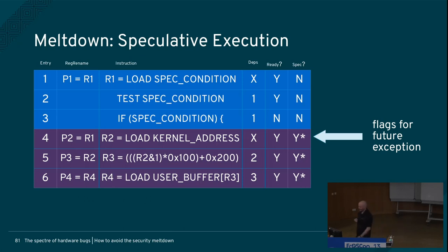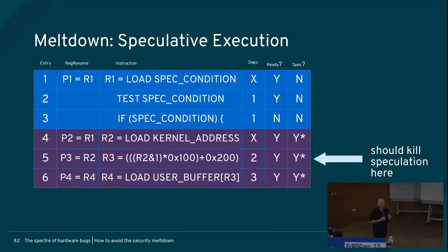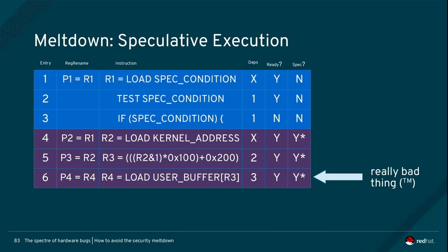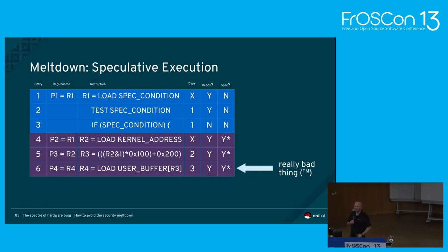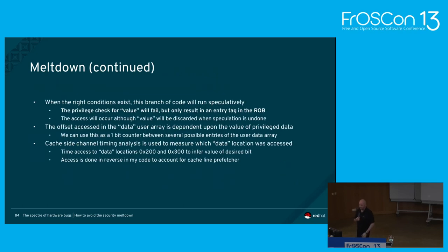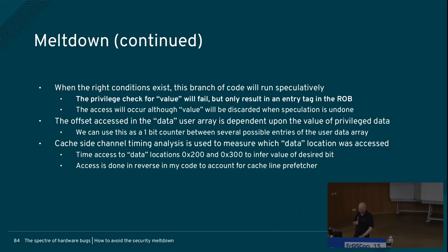Here's what's happening inside the processor: I'm loading a kernel address I shouldn't be able to access. The processor says don't worry, tags it, and keeps going speculatively. But before this ever becomes architecturally visible — known as retiring the instructions — it will throw everything away. However, the things I did to the cache can still be measured. I'm not reading the value directly, and I can never see what happened inside that speculation black box. But I can do something there speculatively that I can observe outside, by touching the shared cache that all programs are sharing. The fact that we have shared caches introduces a side channel through which I can extract the microarchitecture state.